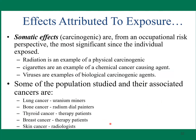Radiation is an example of a physical cancer-causing agent. Cigarettes are an example of a chemical cancer-causing agent. Viruses are an example of biological cancer causation. Some of the population studies on associated cancers include lung cancer, bone cancer, and thyroid cancer — with various factors contributing to these cancers.